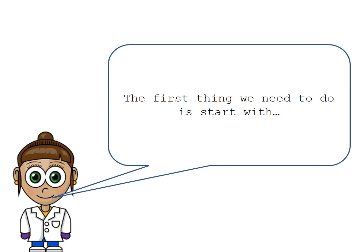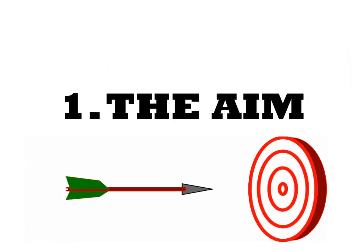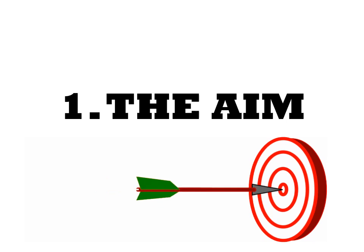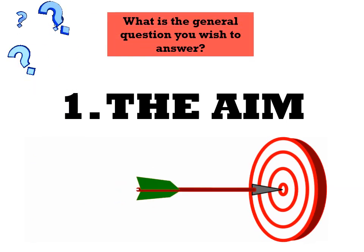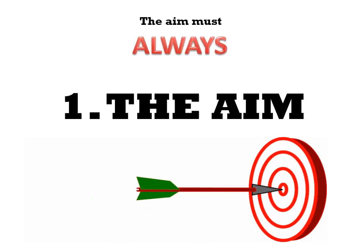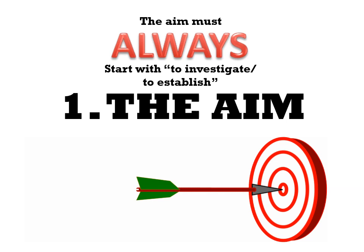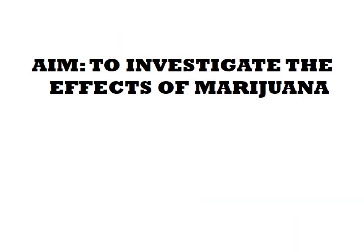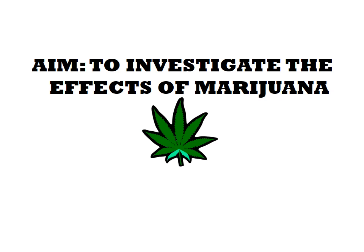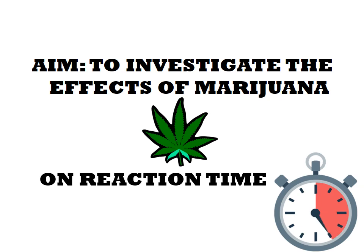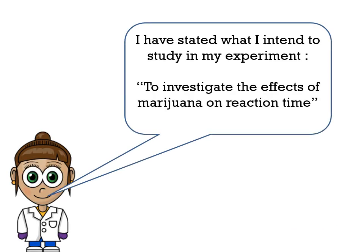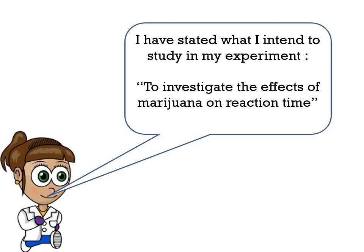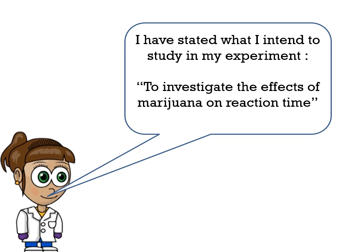The first thing we need to do when conducting an experiment is start with the aim. We need to state what we are interested in investigating — the general question we wish to answer. The aim must always start with 'to investigate' or 'to establish'. For example, if we were looking at the effects of marijuana on reaction time, the aim would be: to investigate the effects of marijuana on reaction time.